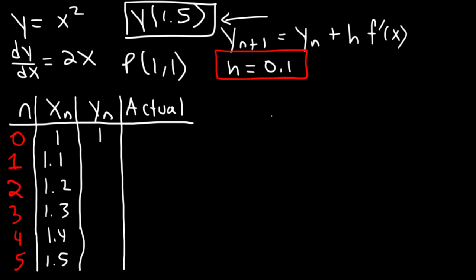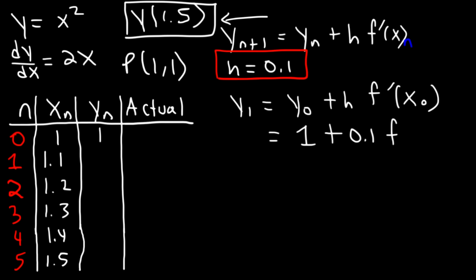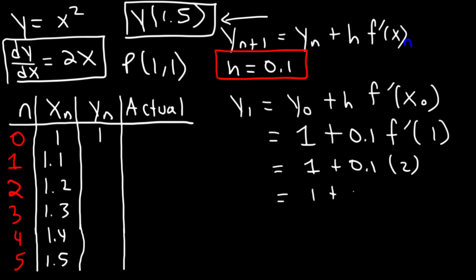Now let's go ahead and calculate y sub 1. So y sub 1 is going to equal y sub 0 plus h times f prime of x sub 0. y sub 0 is 1, h is 0.1, and x sub 0 is 1. The derivative f prime of x is 2x, so f prime of 1 is 2 times 1, which is 2. So this is 1 plus 0.1 times 2, which is 1 plus 0.2, so that's 1.2.